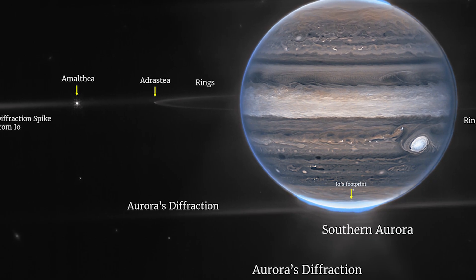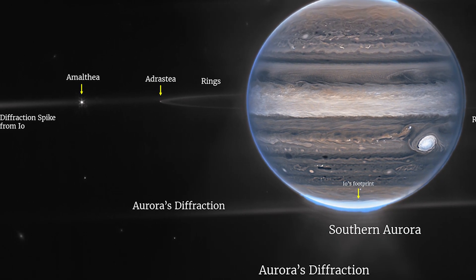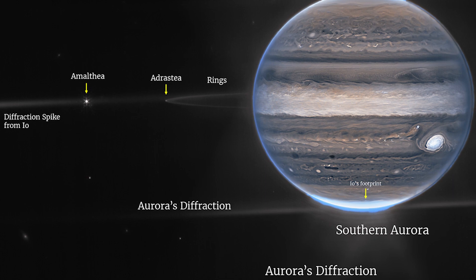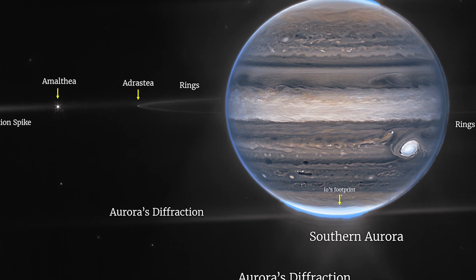The JWST team has released a pair of highly detailed images of Jupiter that show its auroras around the poles. Both images are composites.